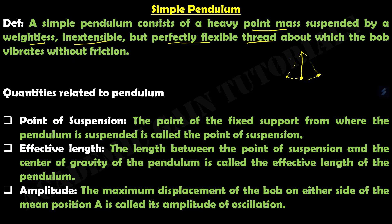There are some quantities related to this pendulum. One is the point of suspension. The point of suspension is the point of the fixed support from where the pendulum is suspended. Suppose this is our fixed support where our pendulum is oscillating. We represent this point as P, so P is our point of suspension.